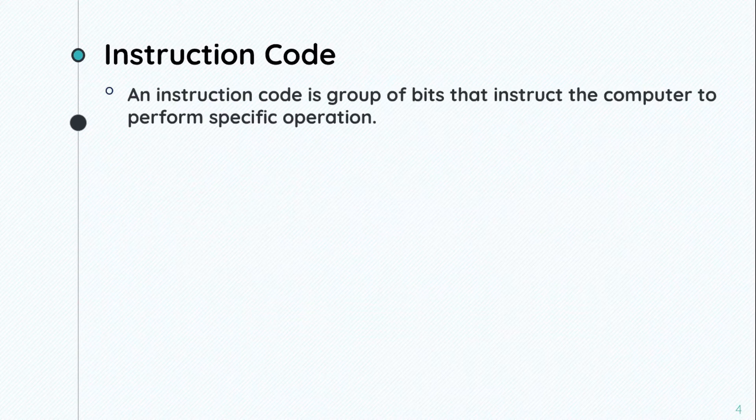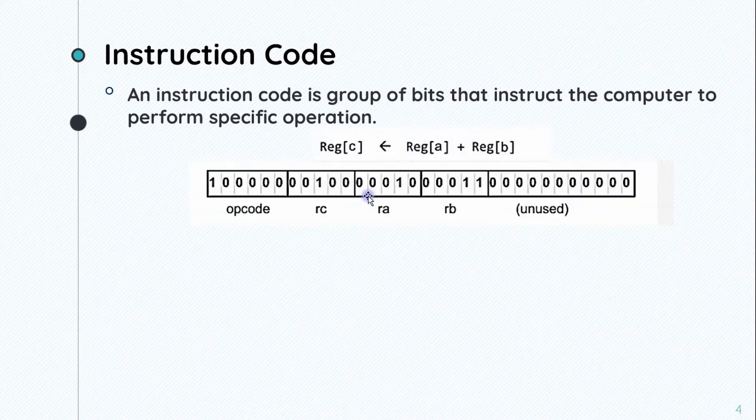An instruction code is a group of bits that instruct the computer to perform specific operation. The instruction code specifies which registers contain the data and where to perform the operation.